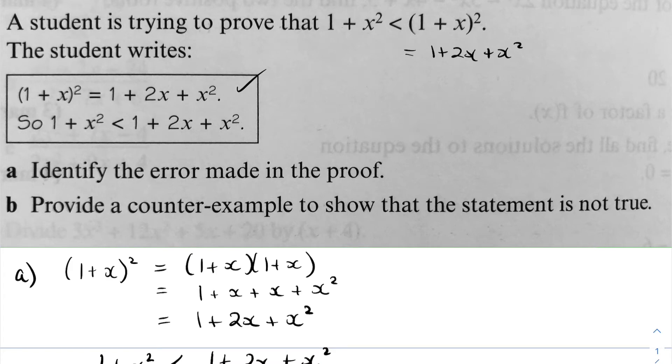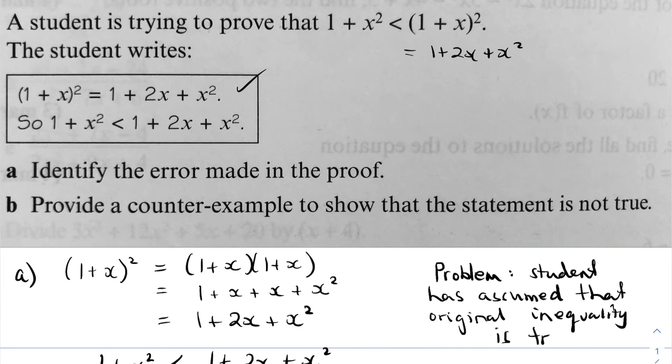Found an expansion for the 1 plus x being squared, and then concluded that the slightly different format of that quadratic inserted into that inequality will also be true. So that's a problem. One problem is the student has assumed that the original inequality is true, whereas they are supposed to be showing that inequality is true.